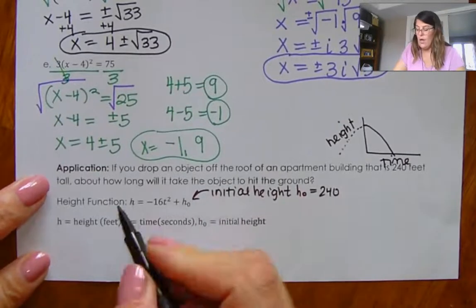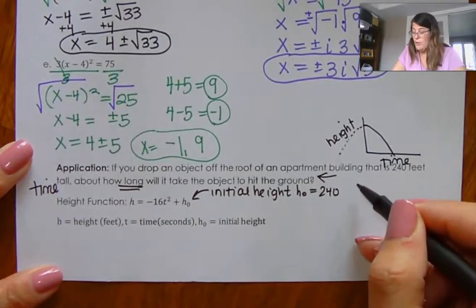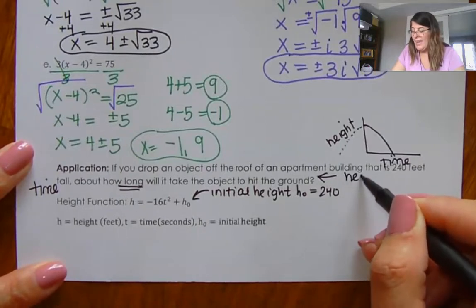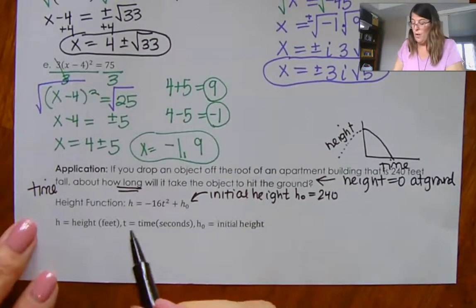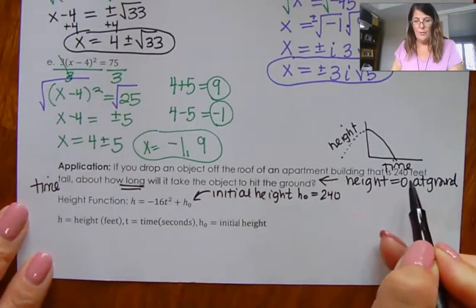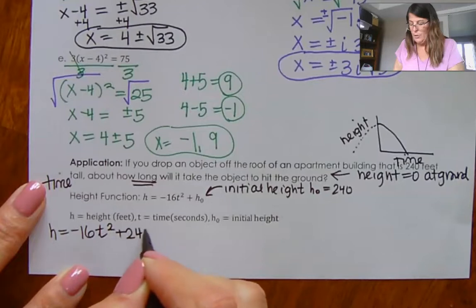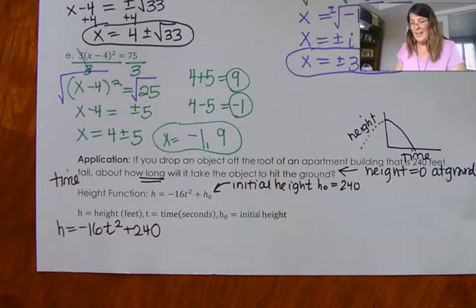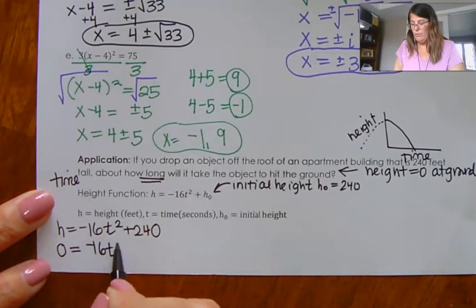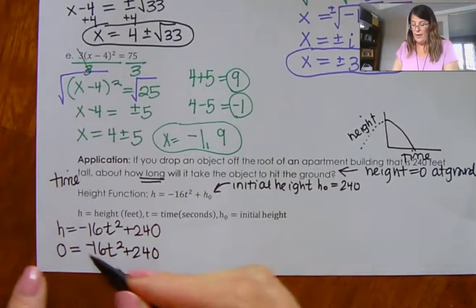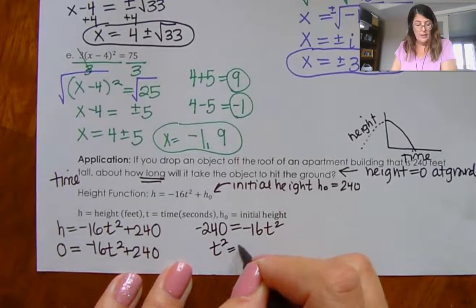The question asks how long until it hits the ground. The height of something on the ground is zero. So I plug in 240 for the initial height: the height function is negative 16t² plus 240. When does h equal zero? I subtract 240: negative 240 equals negative 16t². Divide by negative 16: t² is equal to 15. Since it's a word problem, I want a decimal answer, not a simplified radical. I go to my calculator and do the square root of 15.